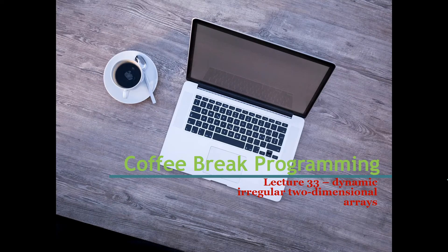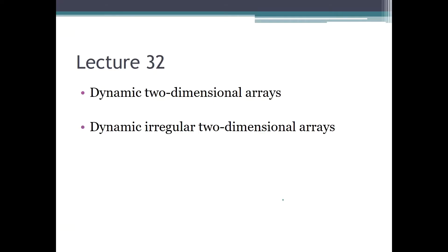Hello everybody and welcome to lecture 33 of our Coffee Break Programming course. In the previous lecture we saw how we can create dynamic two-dimensional arrays, and in today's lecture we will see the same thing — dynamic two-dimensional arrays — but we will add one specific feature to those arrays: irregularity. We will see again how we created dynamic two-dimensional arrays and now we will try to make those arrays a bit more complicated or irregular.